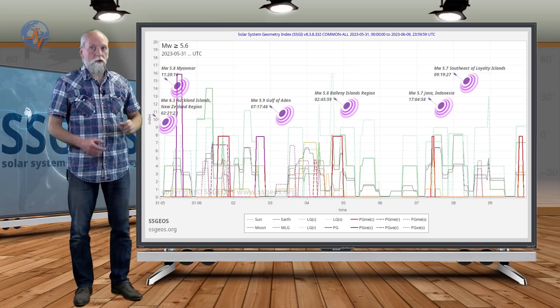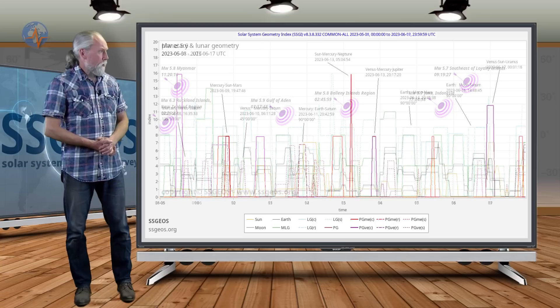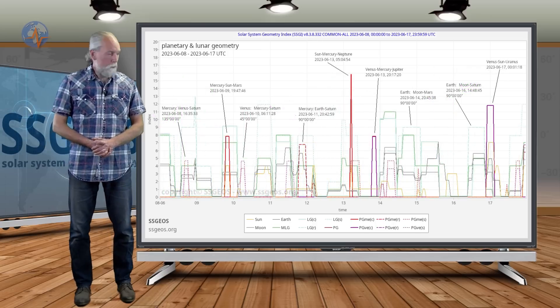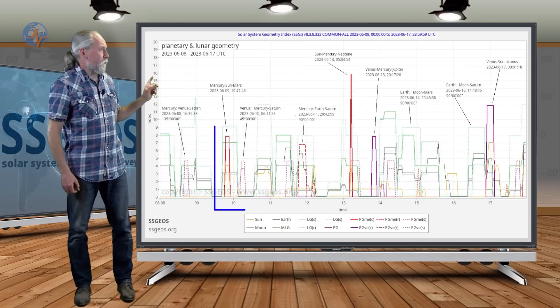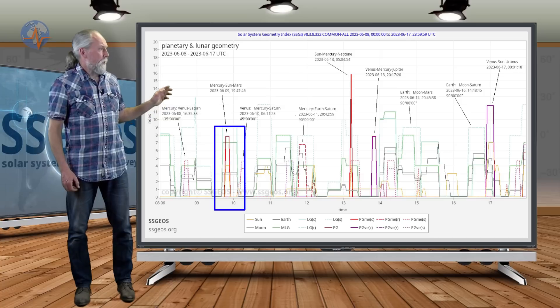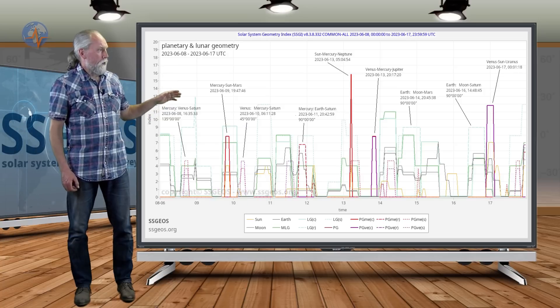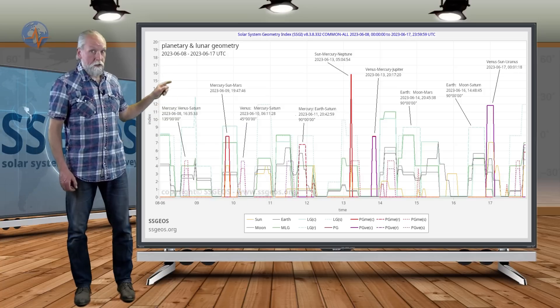If we look at the geometry for the coming week, we see conjunctions coming up. Tomorrow we have Mercury-Sun and Mars in conjunction, and it will be followed by the most interesting geometry in the coming week.